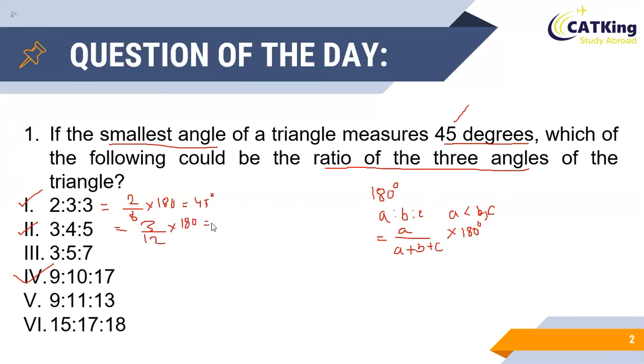In option 3, the smallest angle will be equal to 3 divided by (3 + 5 + 7), that is 15, times 180 degrees, which is not equal to 45 degrees, and hence it can be eliminated.